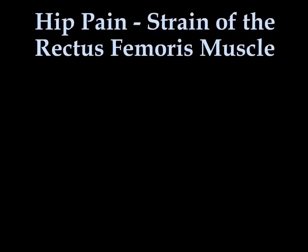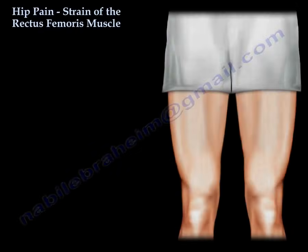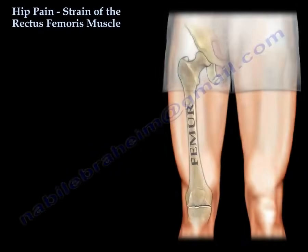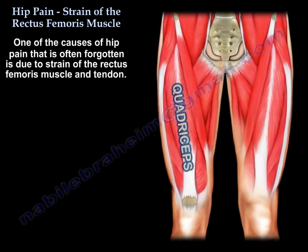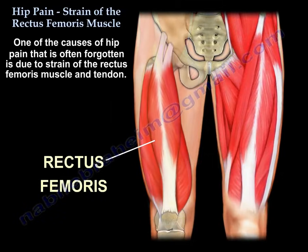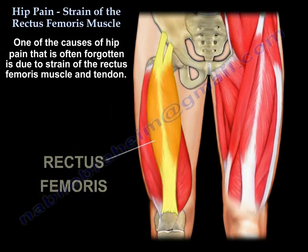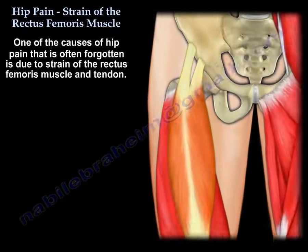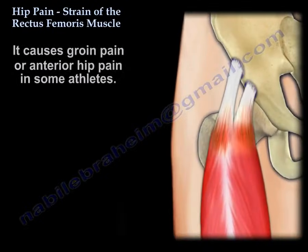Hip pain: a strain of the rectus femoris and its anatomy. One of the causes of hip pain that is usually forgotten is a strain of the rectus femoris muscle and tendon. It causes groin pain or anterior hip pain in some athletes.